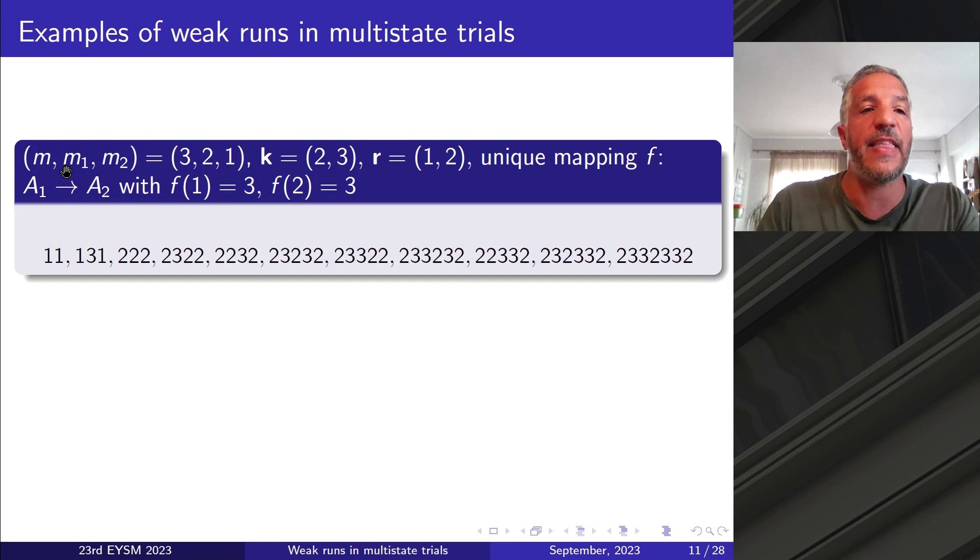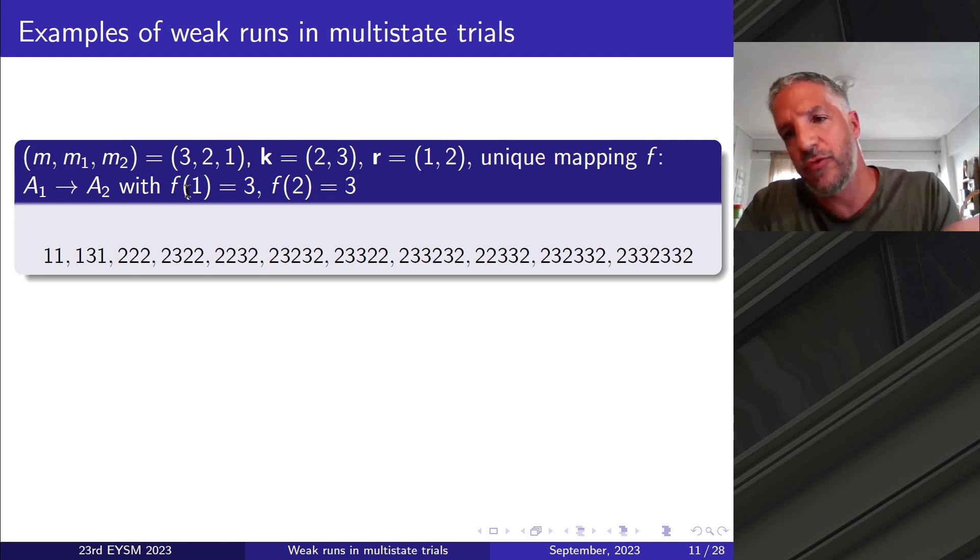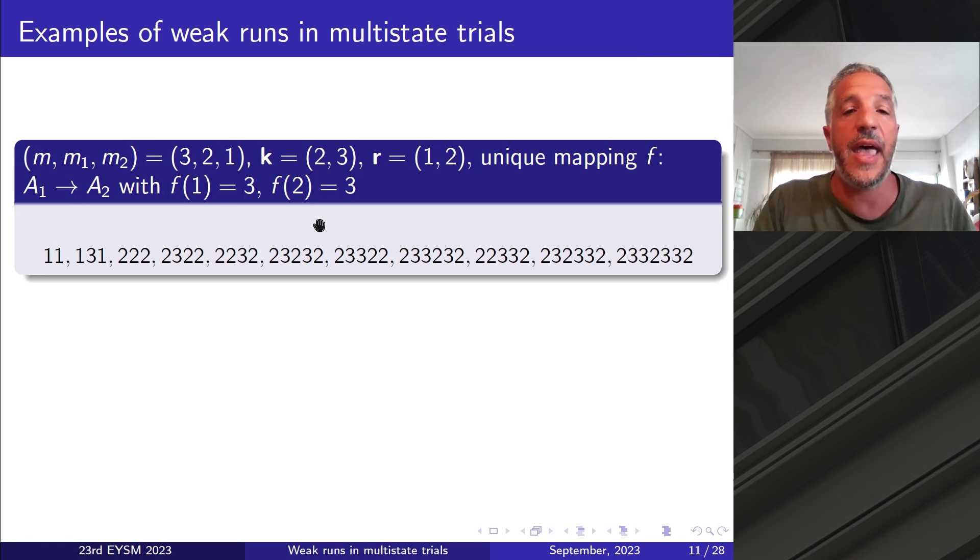You may understand that it's a straightforward generalization of the definition of weak runs in binary trials I have just given above before. So I think one or two examples are necessary for two reasons. First of all, in order for you to be familiarized with that, and secondly, these are the two examples that will help us bring into play the new control charts. So if we consider that we have an alphabet of three letters, two kinds of successes, 1 and 2, and one kind of failure, 3, so there is a unique map f, 1 and 2 can only be assigned to 3. So this is the only failure, and it means since k1 equals 2 that we need two ones which can be separated by at most r1 equal 1 three. So we need either 1,1 or 1,3,1, or we need since k2 is equal 3, three 2 successes of the second type, which may be separated by at most two threes. So all these are the patterns.